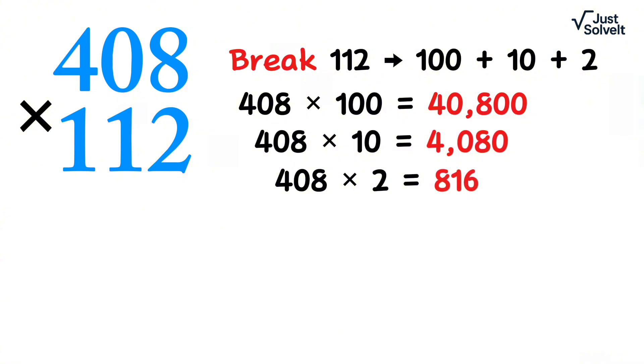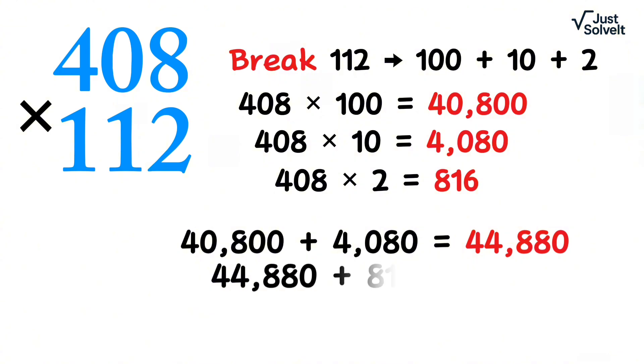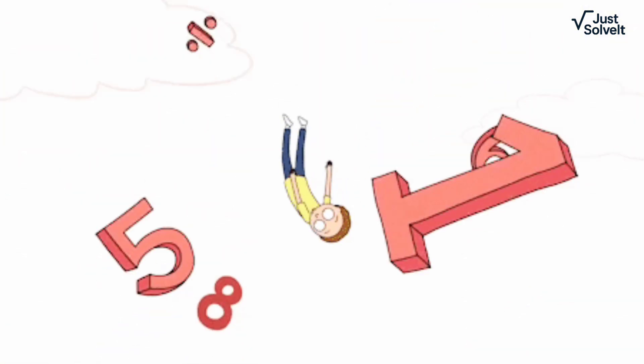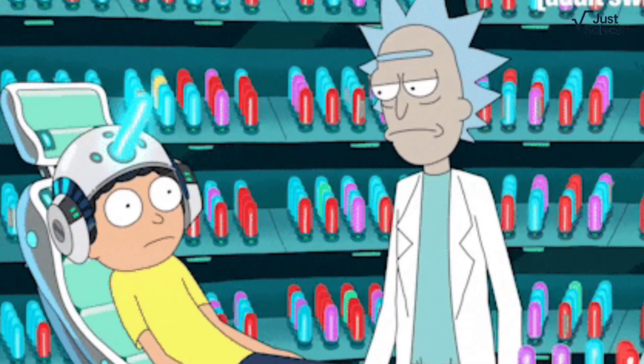Now add step by step. 40,800 plus 4,080 equals 44,880. 44,880 plus 816 equals 45,696. Isn't that fast? No long multiplication, no pen, just mental speed.